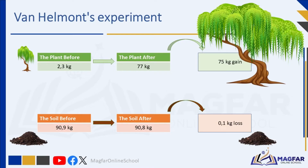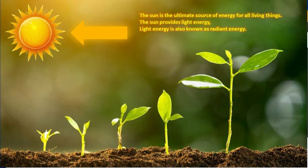Thanks to Jan Baptiste van Helmont's curious experiment, we now know a lot more about the secret life of plants and how they turn sunlight into food and keep our planet alive and thriving. We learned in grade 7 that the sun is the ultimate source of energy for all living things. The sun provides light energy, also known as radiant energy. The light energy from the sun cannot be used by living organisms directly — basking in the sun will not give you the energy that you need to live.